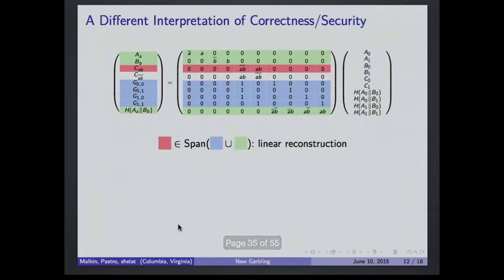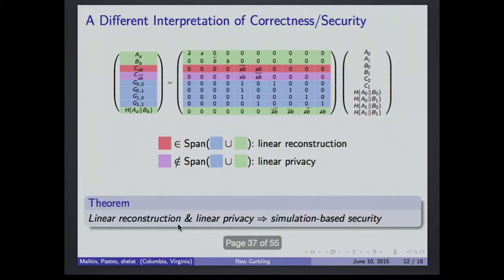So if you look at this matrix, we say that you have linear reconstruction if the correct output wire label is in the span of the green and the blue. So the view of the evaluator spans the correct output wire. And we say that if the other output wire is not in the span, you get something called linear privacy. And our theorem says these two properties are enough for simulation-based security. So essentially, write down your favorite scheme in a matrix notation, fit it to a computer that evaluates these two properties, you get simulation-based security.